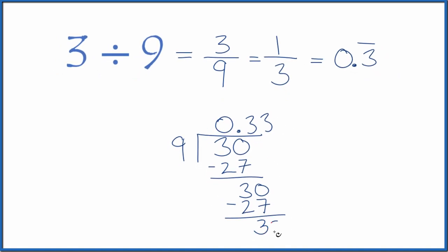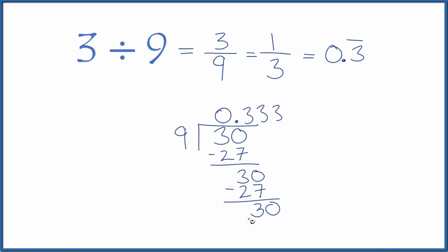Move over 1, call this 30. 3 times 9 is 27. And you get the point. It just keeps going.